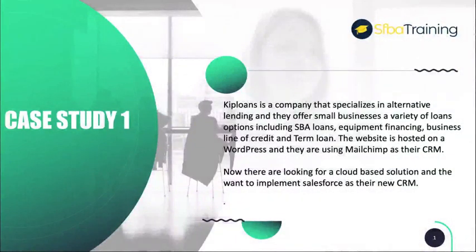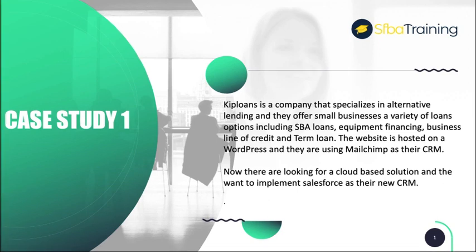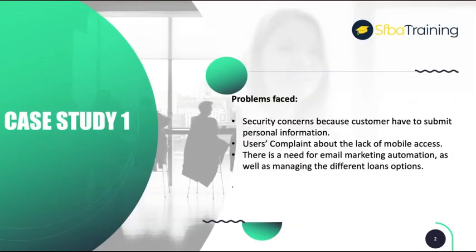Case study one: Kip Loans is a company that specializes in alternative lending. They offer small businesses a variety of loan options including SBA loans, equipment financing, business line of credit, and term loan. The website is hosted on WordPress and they are using Mailchimp as their CRM.